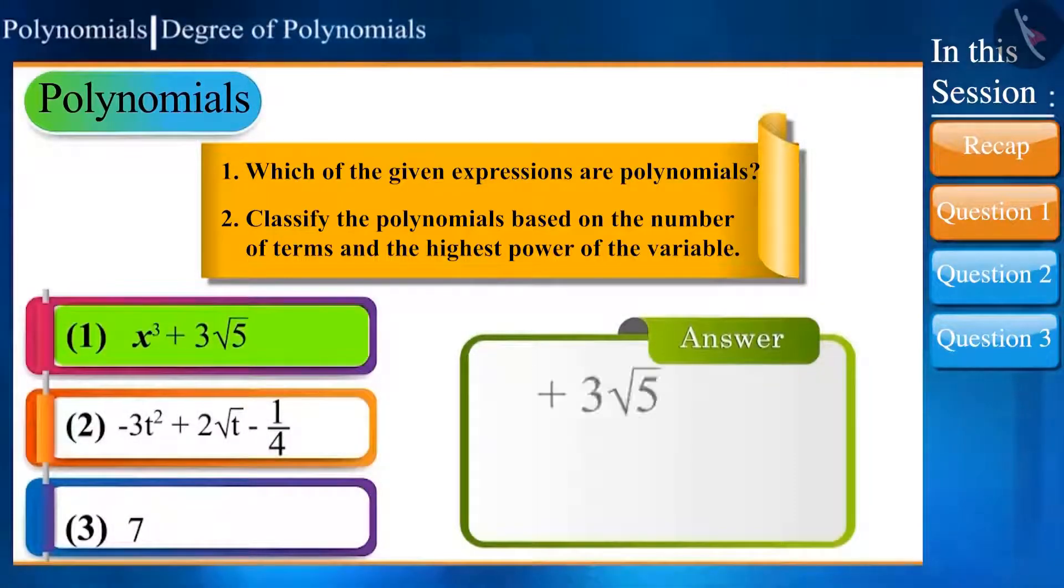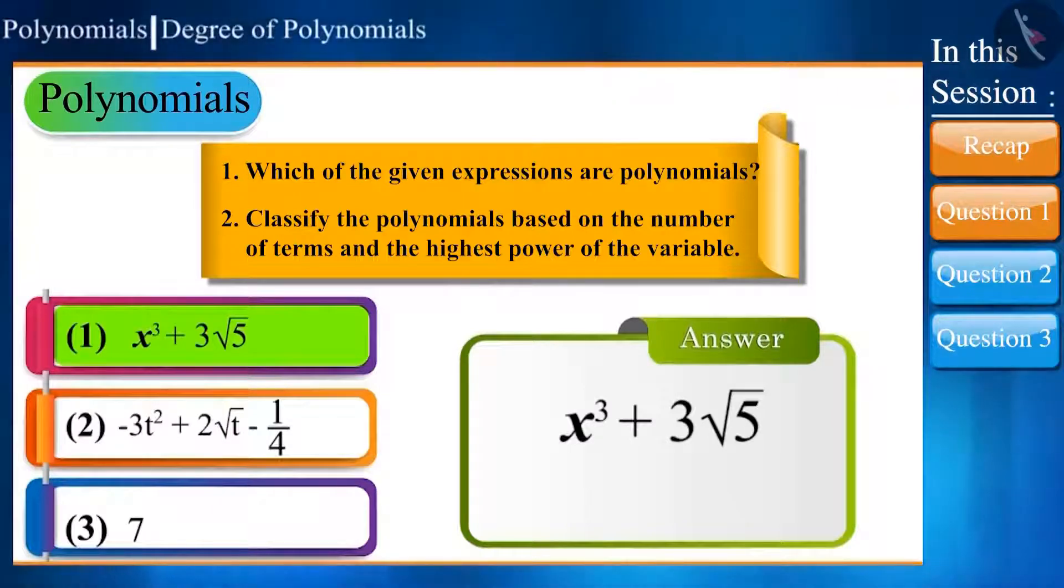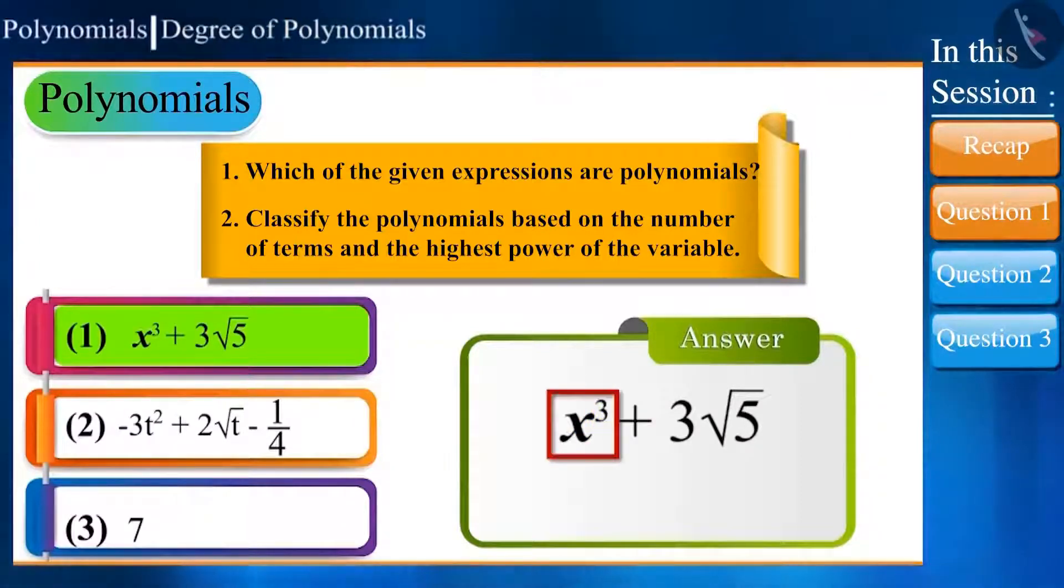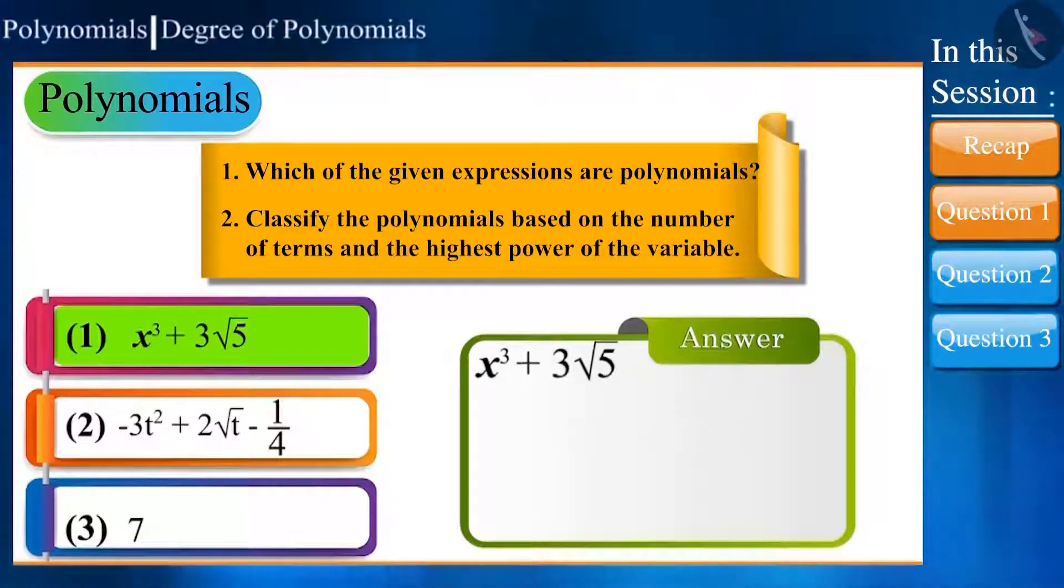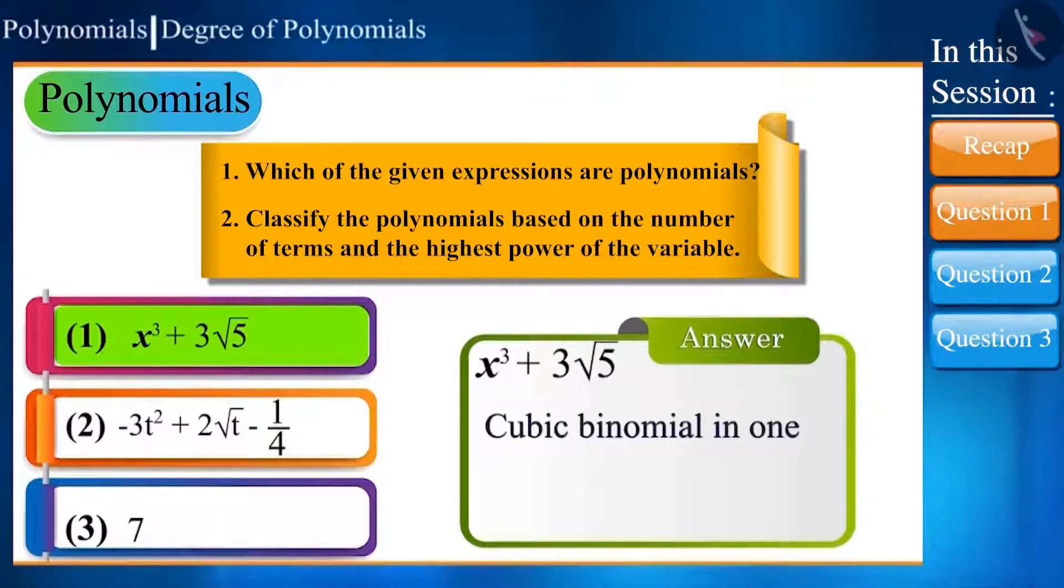The first expression, x to the power of 3 plus 3 to the square root of 5, has only a single variable x whose highest power is 3, and there are two terms: x to the power of 3 and 3 to the square root of 5. This means it is a cubic binomial in one variable.